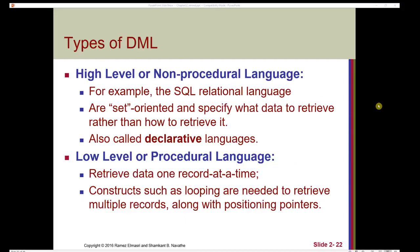There are different types of data manipulation languages. High-level or non-procedural languages — for example, the SQL relational language — are set-oriented and specify what data to retrieve rather than how to retrieve it; these are also called declarative languages. Low-level or procedural data manipulation languages retrieve data one record at a time, and constructs such as looping are needed to retrieve multiple records along with positioning pointers.